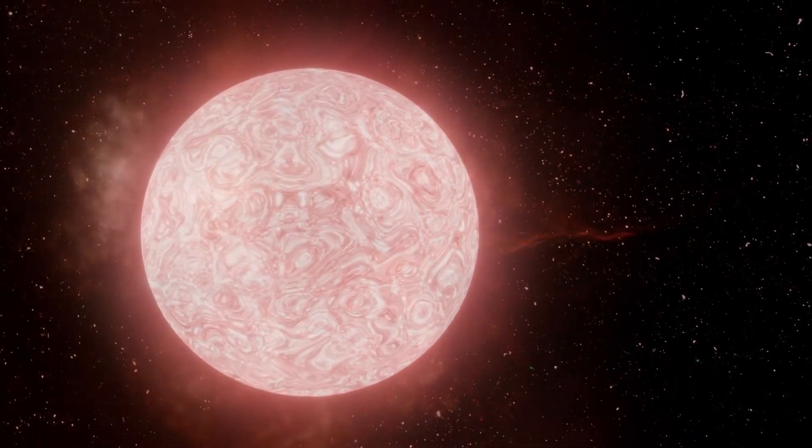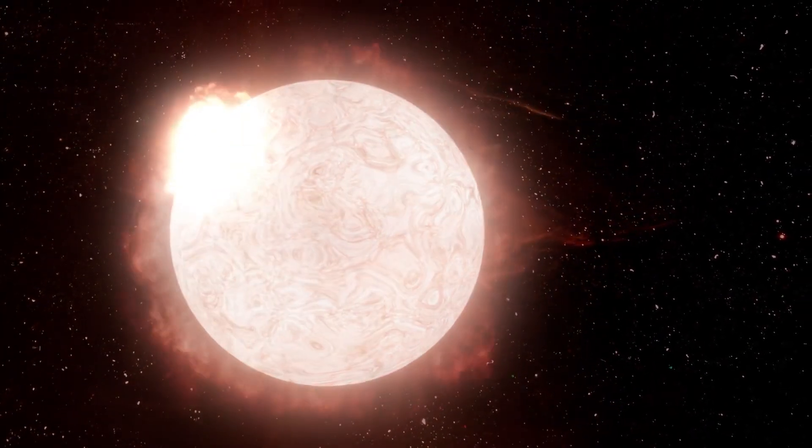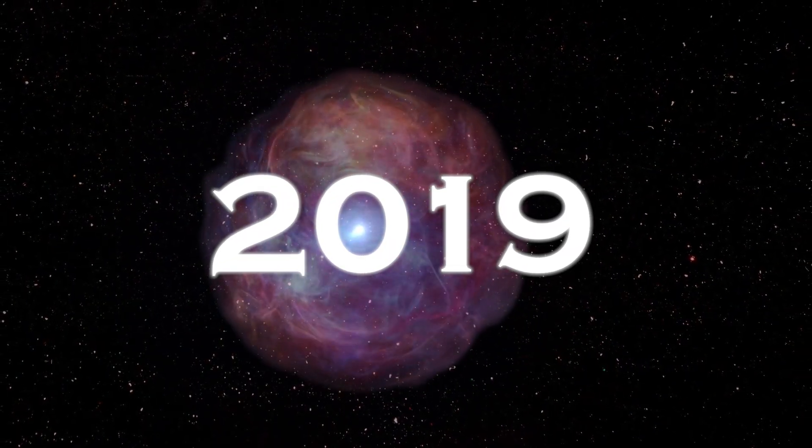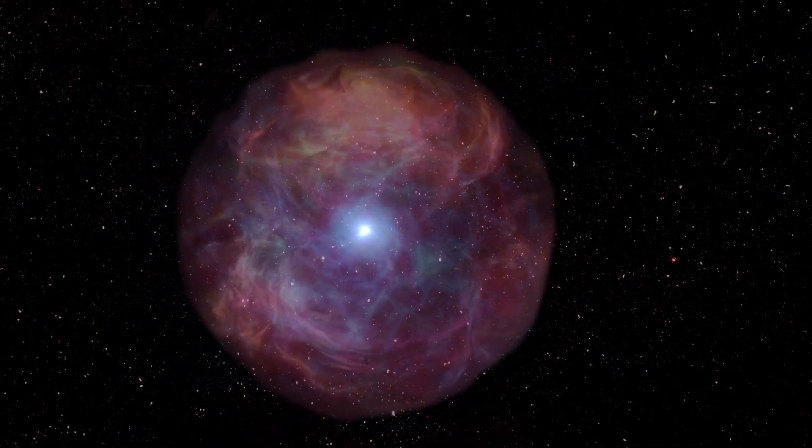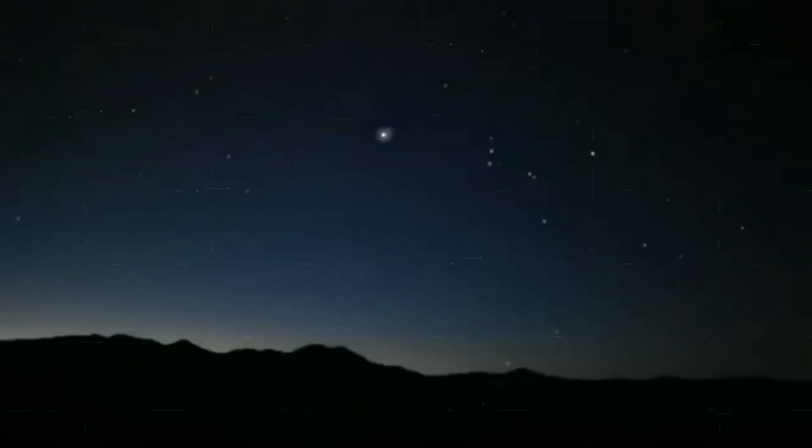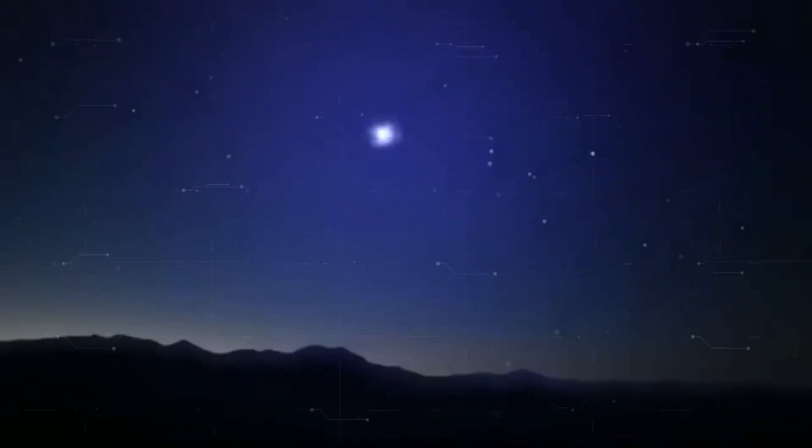Betelgeuse is a red supergiant star nearing the end of its cycle. Surprisingly, in 2019, one of the brightest stars in the sky began to fade noticeably, being visible even to the naked eye.